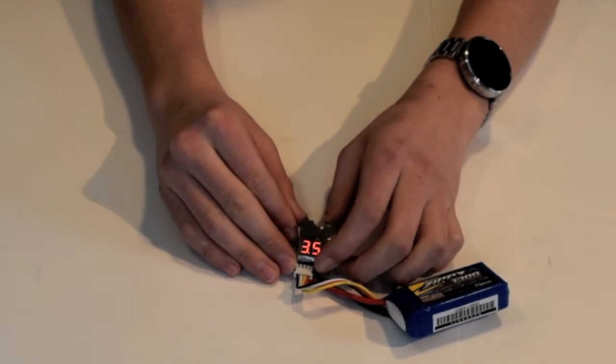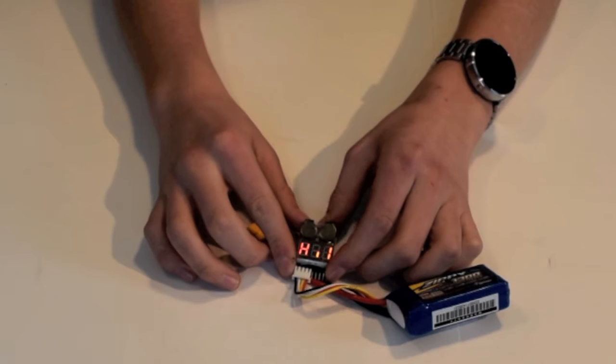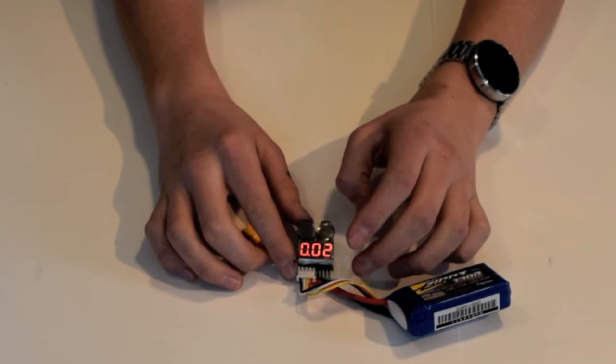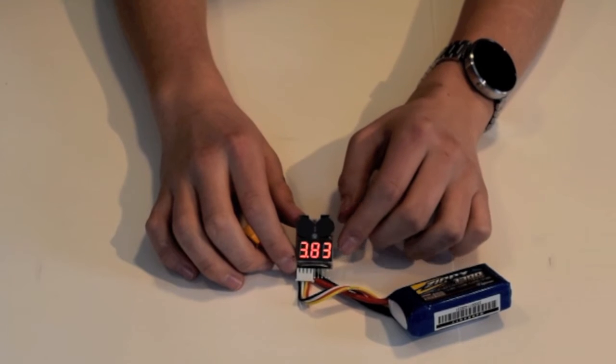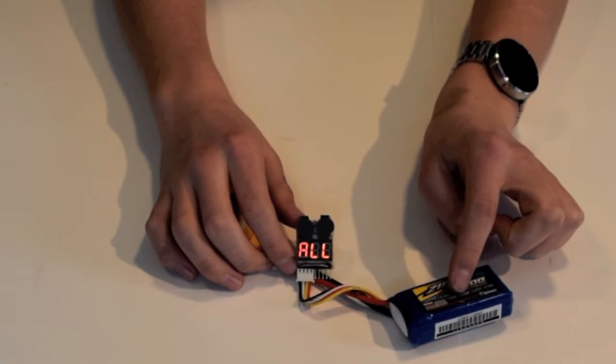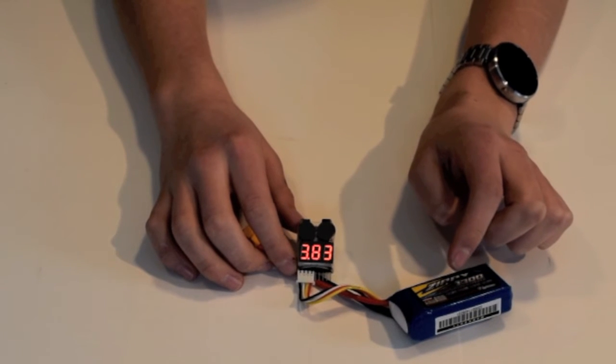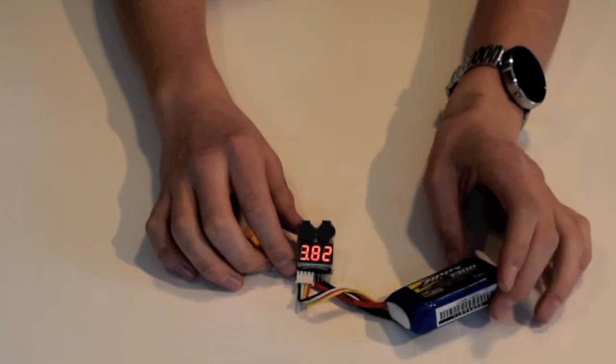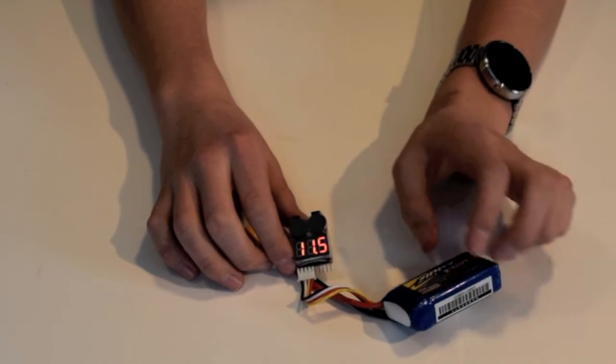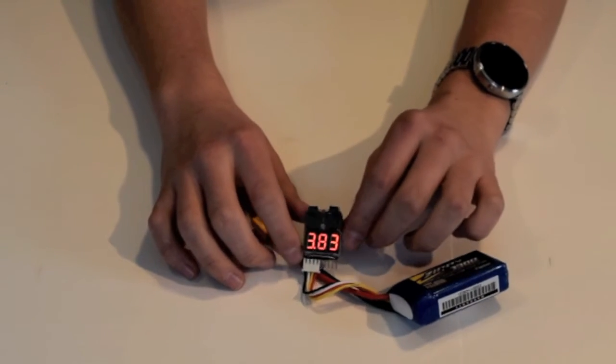So you set that to what you want the alarm to go off when the LiPo reaches that value. The recommended value is 3.5 volts—that's what I have mine set on. Some people will set it as high as 3.7, or some people will go really low like 2.7.